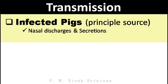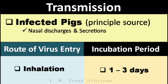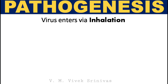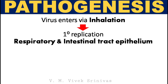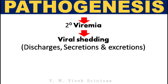Transmission: The nasal discharges and secretions from the infected pig act as the principal source of this virus. This virus enters via inhalation. The incubation period is on average 1 to 3 days from the entry of the virus. Pathogenesis: Following entry of virus through inhalation, the virus does its initial replication in the epithelium of the respiratory tract and intestinal tract, followed by viremia. The next replication occurs at the visceral and lymphoid organs, and the virus is then distributed through secondary viremia with subsequent viral shedding through discharges, secretions, and excretions.